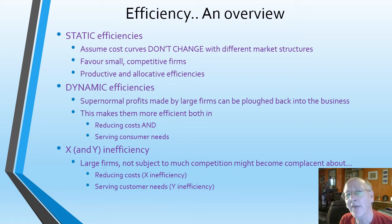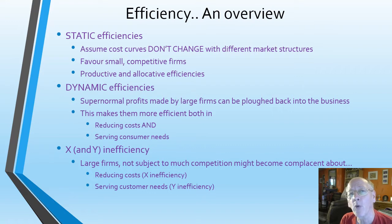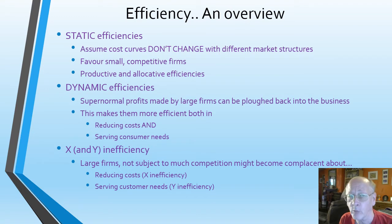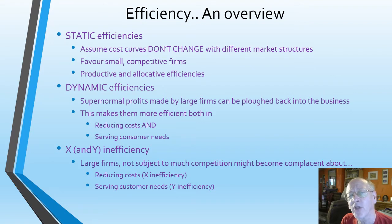To counter that we have dynamic efficiencies, where we don't assume that large firms' super normal profits are wasted. They can use those super normal profits to become more efficient in the way they produce and in the way they chase up customers. So dynamic efficiencies tend to favour larger firms — useful for counterbalance. Also useful for counterbalance is X inefficiency. I'll also spend a sentence or two looking at Y inefficiency, and that's where large firms not subject to competition become a little bit complacent.